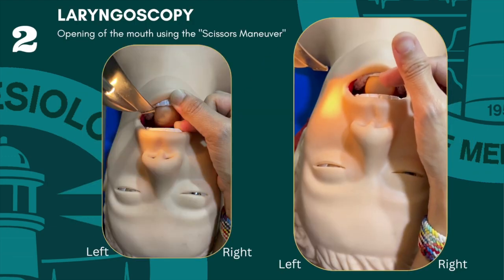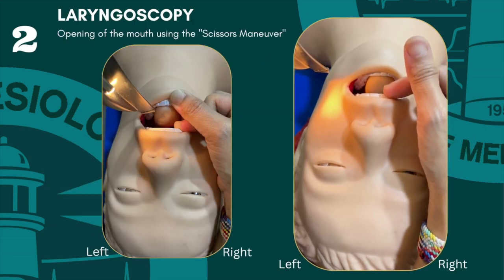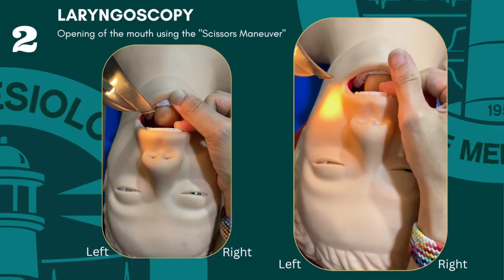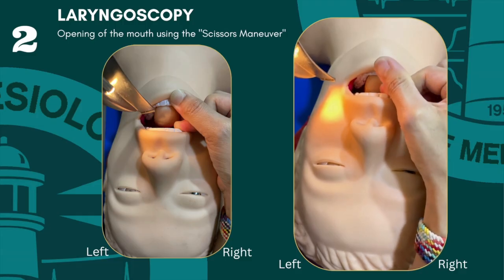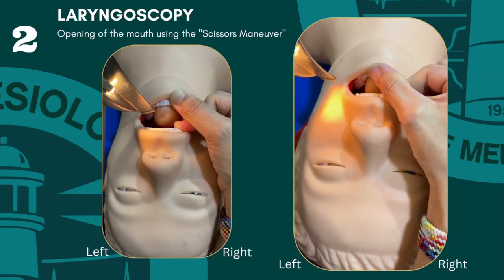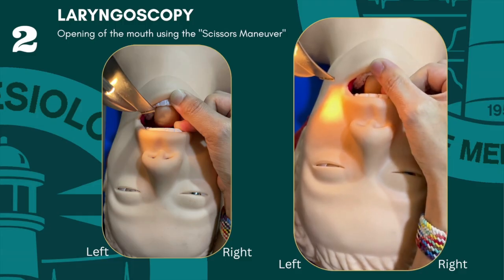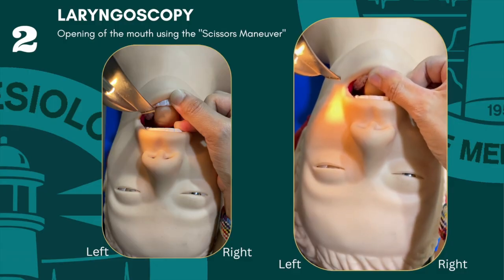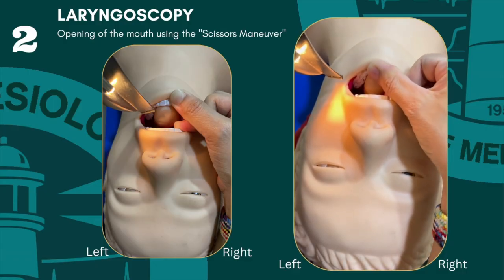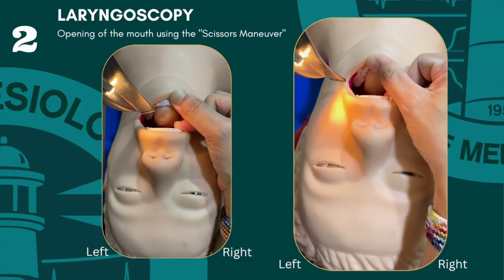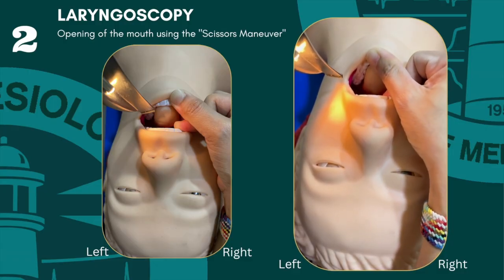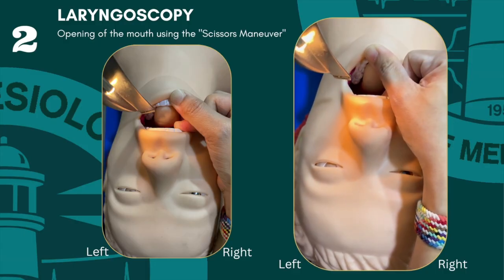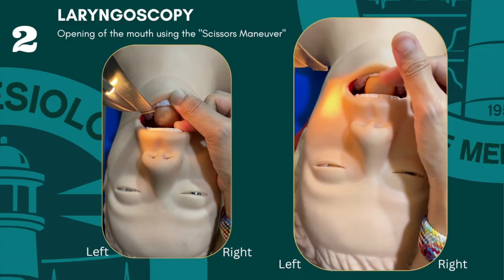Laryngoscopy proper. In order to open the mouth during intubation, use the thumb to open the lower set of teeth and the rest of the fingers of the right hand to leverage on the upper set of teeth. This is referred to as the scissors maneuver. It will effectively open the mouth, resulting in better visualization.